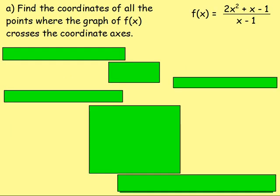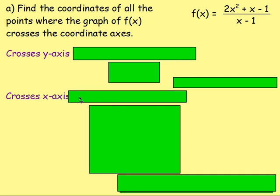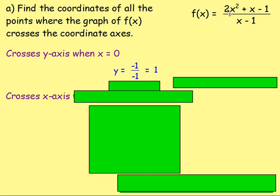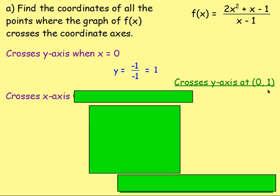Part a — find the coordinates of all the points where the graph of f(x) crosses the coordinate axes. We want to work out where it crosses both the x and the y axes. It crosses the y-axis when x equals zero. Replacing x with zero: numerator gives 0 + 0 − 1 = −1, denominator gives 0 − 1 = −1, so y equals 1. Therefore it crosses the y-axis at (0, 1).